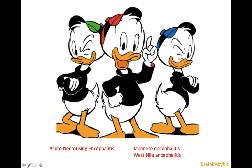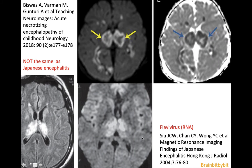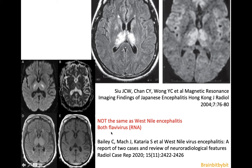Acute necrotizing encephalitis resembles two other encephalitis types caused by a flavivirus: Japanese encephalitis and West Nile virus. Japanese encephalitis involves the thalamus, and West Nile virus resembles Japanese encephalitis, also being a flavivirus, but occurring in a different geographical region.